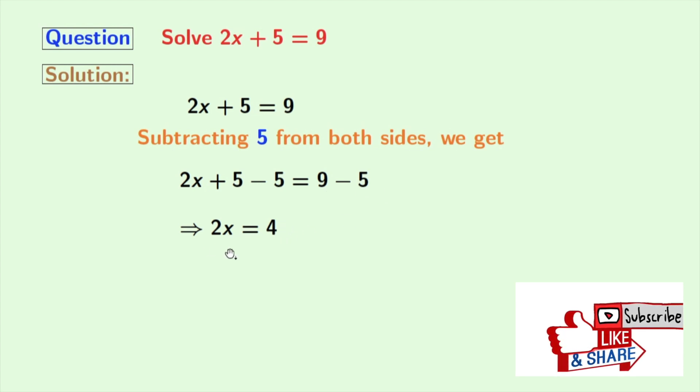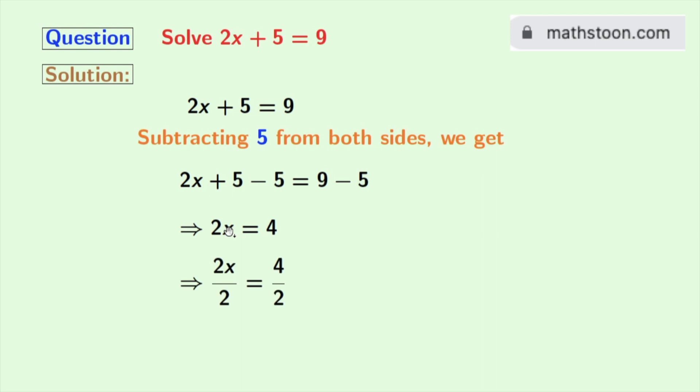Now look that the coefficient of x is 2 here. That's why we will divide both sides by 2. Doing so, we get 2x by 2 is equal to 4 by 2.